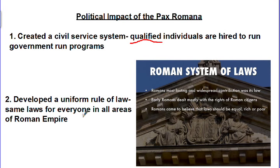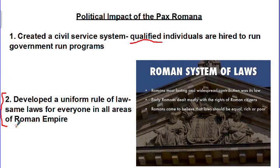They also developed a uniform rule of law, meaning the same laws apply to everyone in all areas of the empire. This is key — another aspect of great empires we've seen throughout history. We saw Hammurabi's Code, the Roman Twelve Tables, and the Edicts of Ashoka back in the Mauryan unit. Anytime you have a rule of law that's the same for everyone, that's usually a good thing.